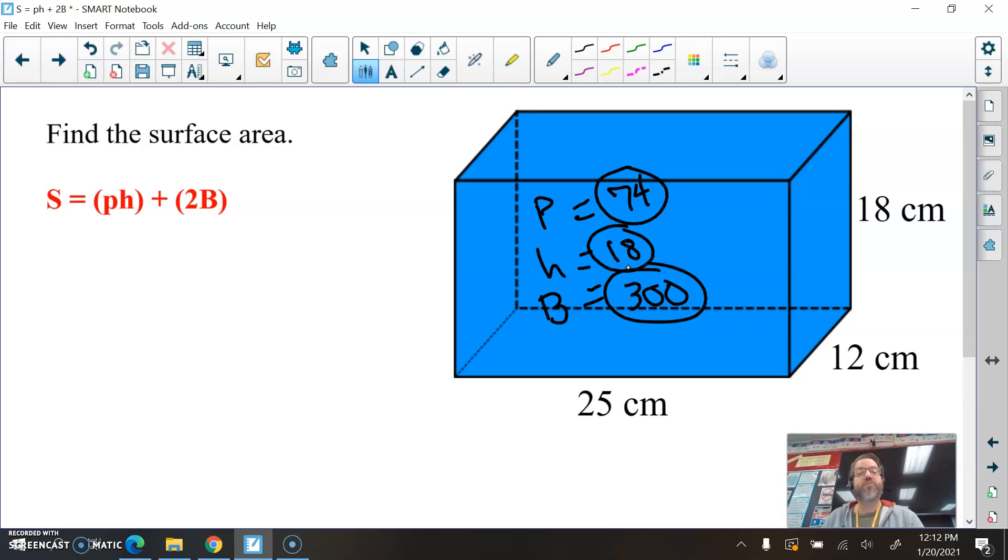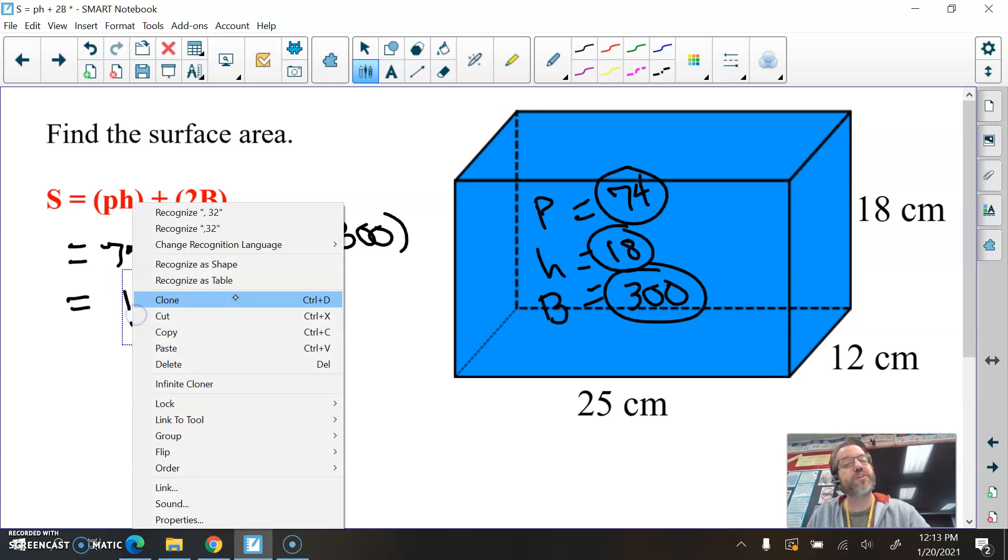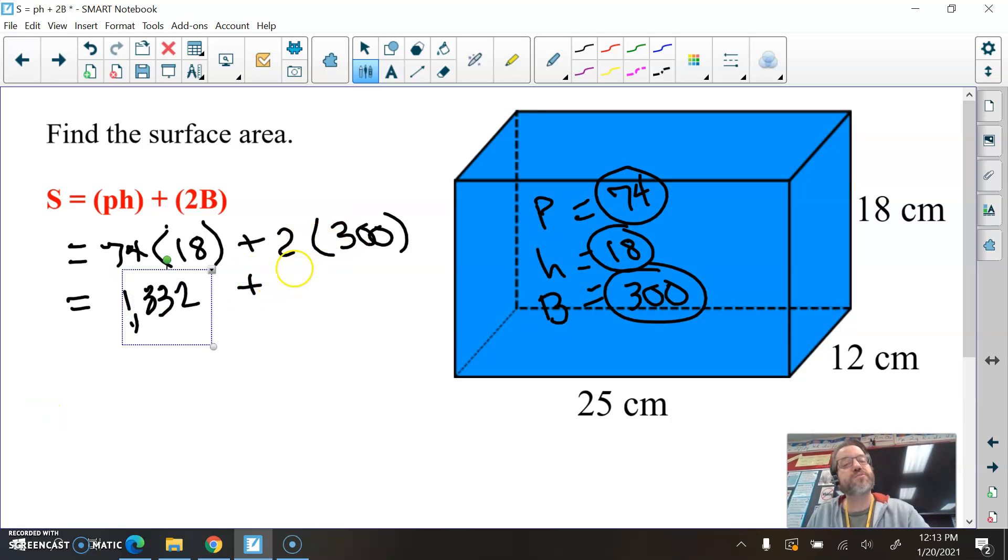Armed with this information, we can go ahead and substitute these values in to our formula. Surface area equals perimeter of the base, 74, times the height, which is 18, plus 2 times big B, the area of the base, which is 300. All right. I'm going to use my calculator now to take 74 and multiply that by 18. So 74 times 18 equals 1332. 1,332 plus, and then 2 times 300 is 600. And when you add these together, you get 1,932 square centimeters.